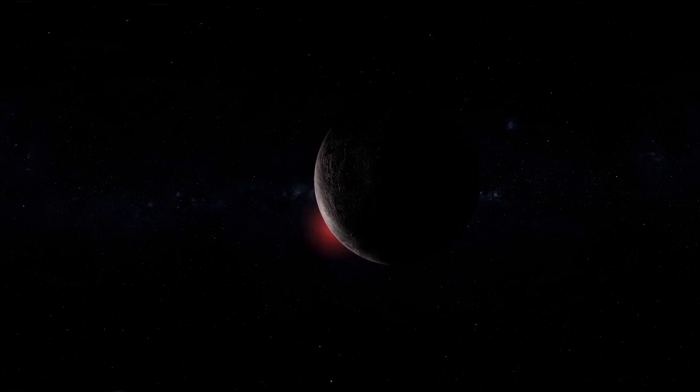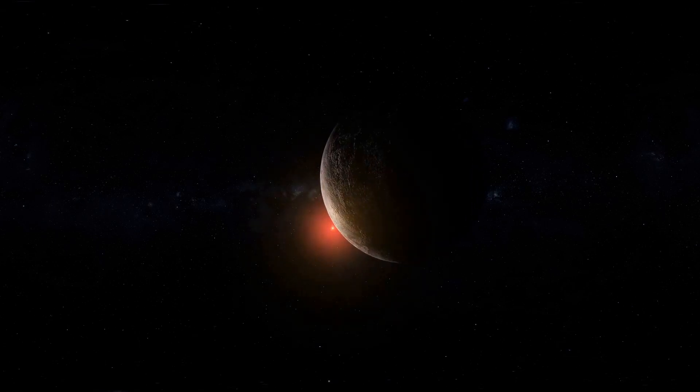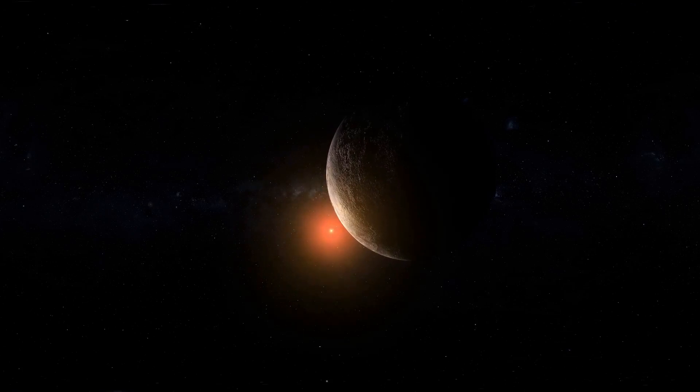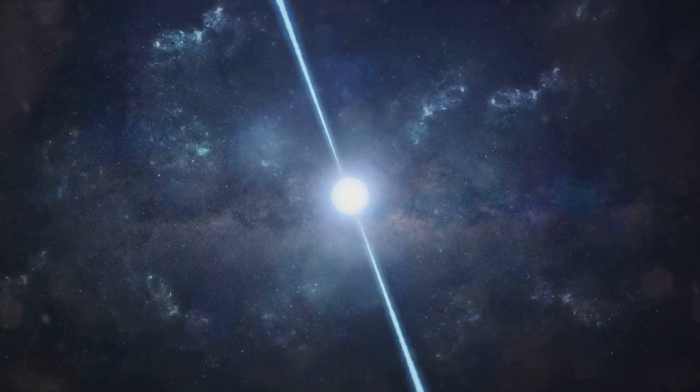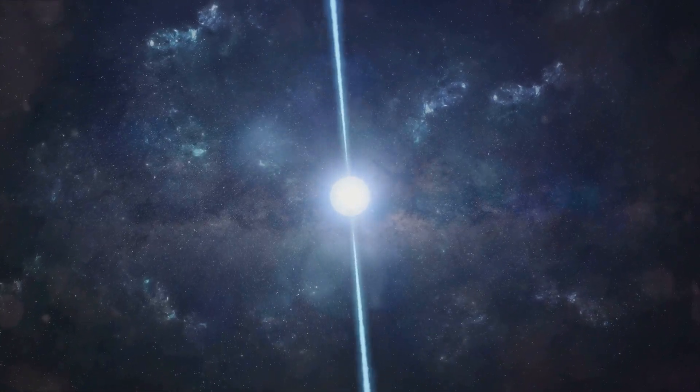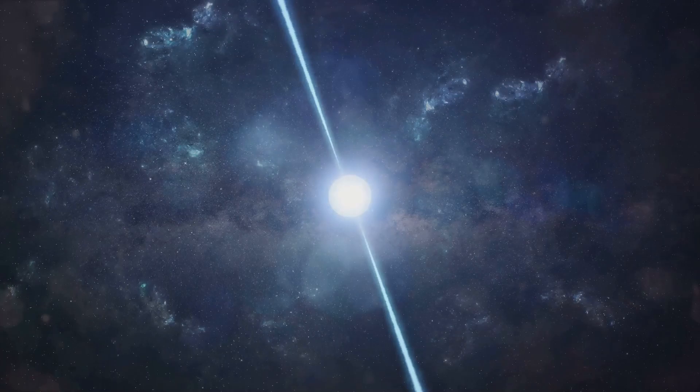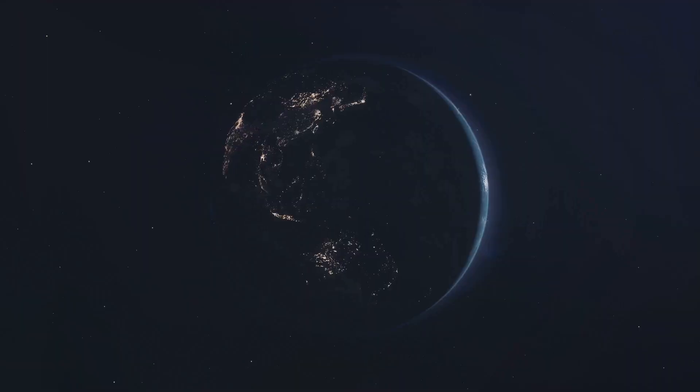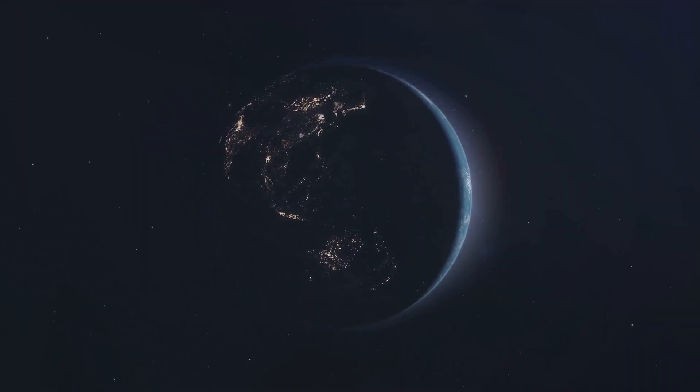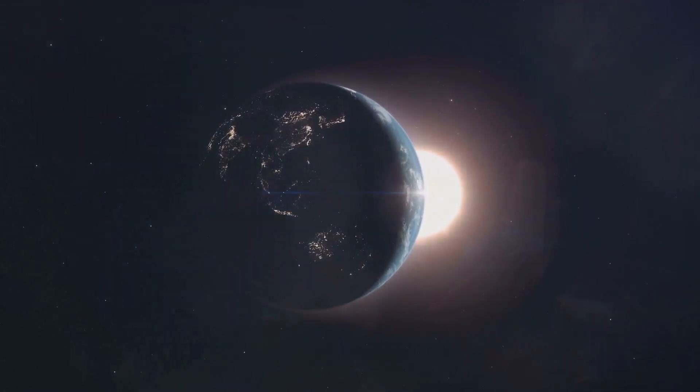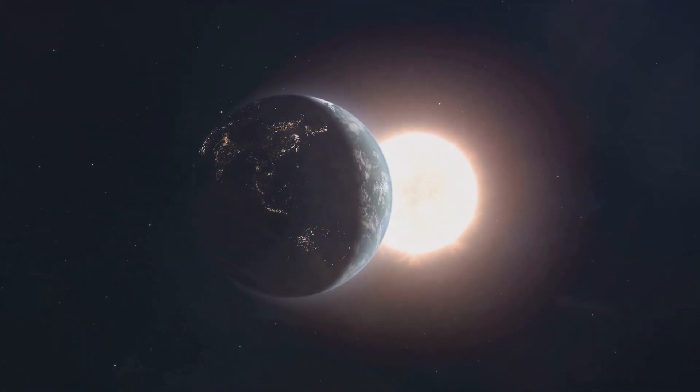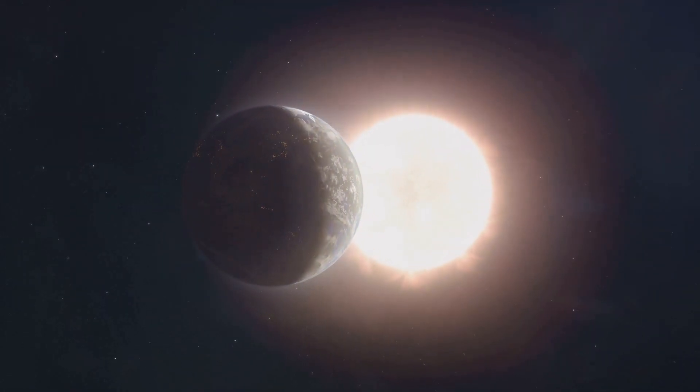But don't let its size fool you. What it lacks in size, it makes up for in longevity. Red dwarf stars like Proxima Centauri have incredibly long lifespans, estimated to be up to trillions of years. That's right, trillions with a T. This is because they burn their fuel, hydrogen, very slowly and efficiently, unlike larger stars that burn through their fuel at a much faster rate.